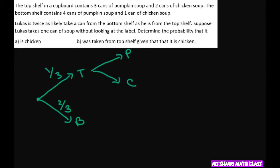chicken. So, actually it should be three out of five are pumpkin soup and two out of five is chicken soup on the top shelf. And on the bottom shelf, we have pumpkin and chicken again: four out of five pumpkin and one out